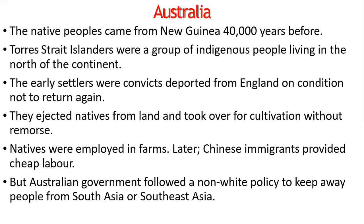Since the distinction between past and present is blurred. In the late 18th century there were between 350 and 750 native communities in Australia, each with their own language. Even today, 200 of those languages are still spoken.